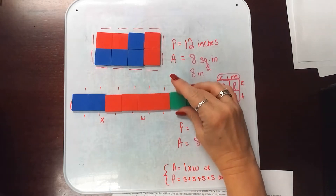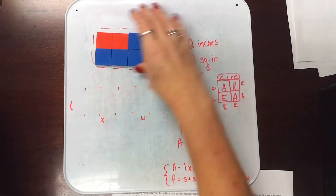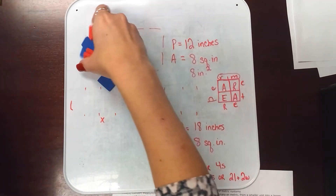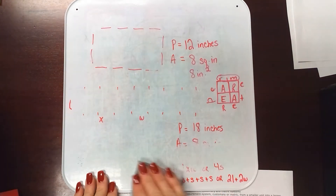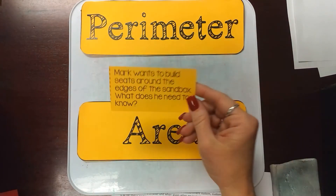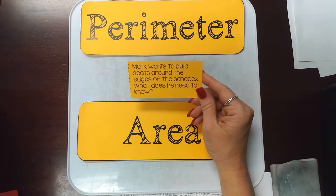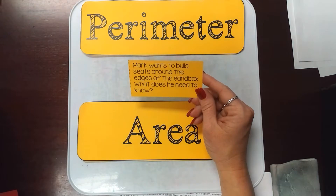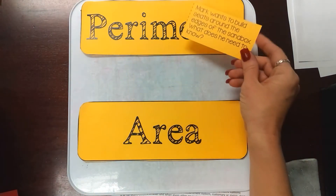Once they've figured out the formulas, one activity I like doing before we get into problem solving is the area-perimeter sort. It's very important for students to understand what situations call for perimeter and what situations call for area, because sometimes the problems won't tell us. For instance: 'Mark wants to build seats around the edges of the sandbox — what does he need to know?' If we're talking about the edges around a shape, we need the perimeter.